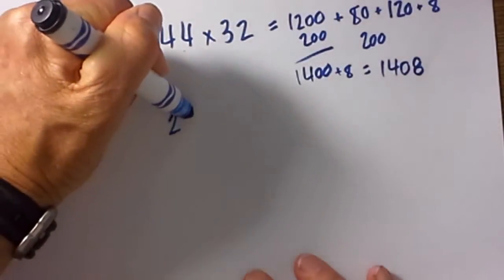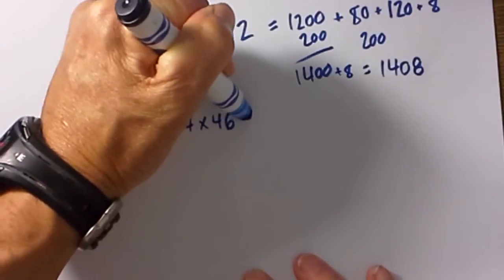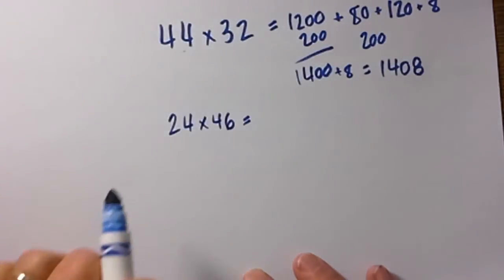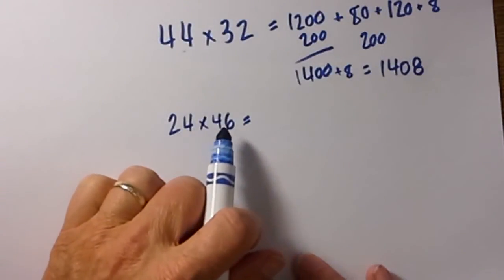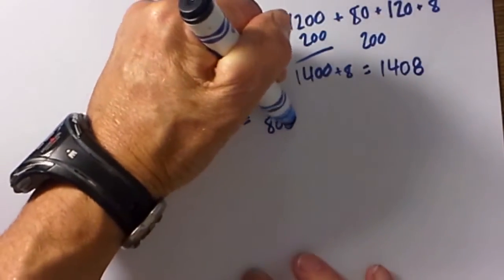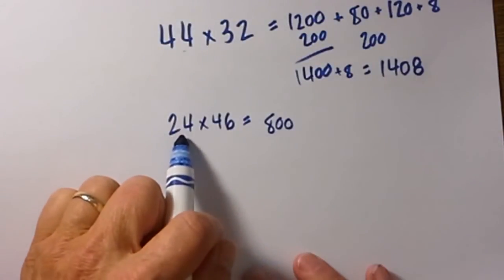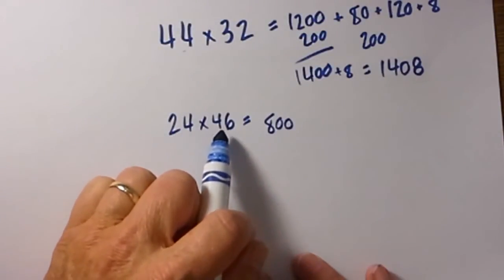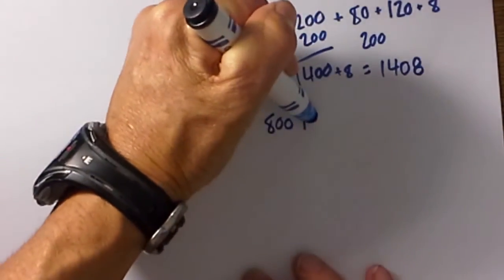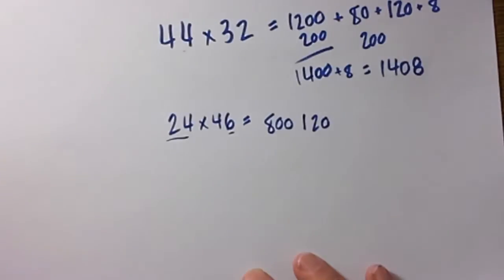Let's look at another example. We have 24 times 46. The first thing we do is we take 20 times 40 and that will equal 800. Then next is 20 times 6 which is 120.